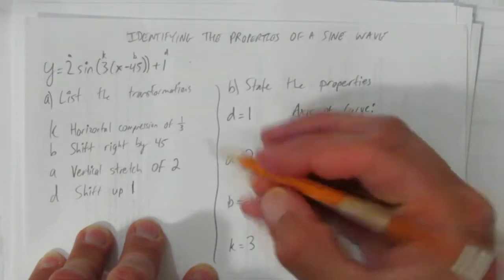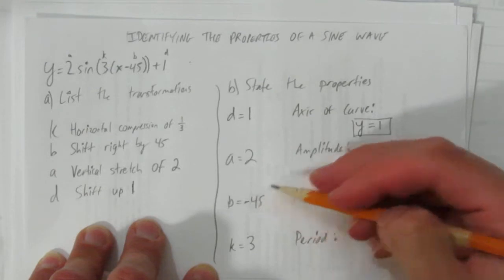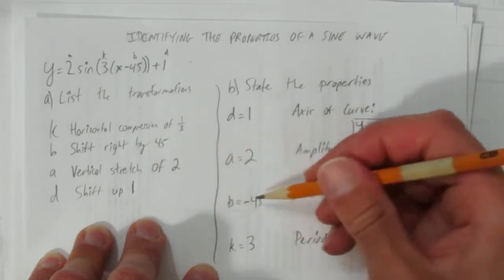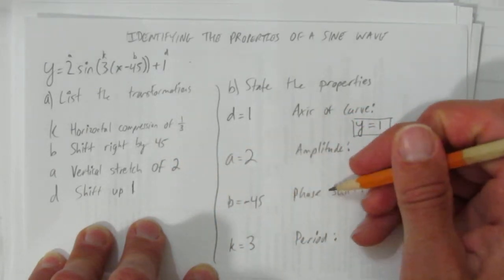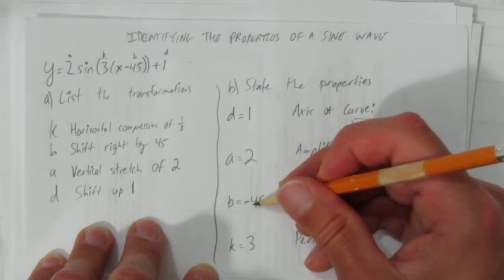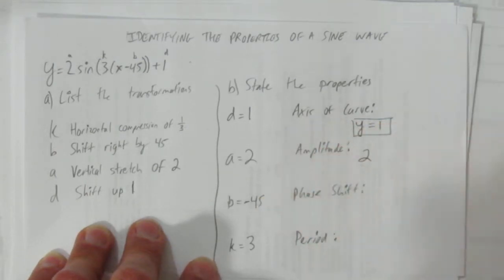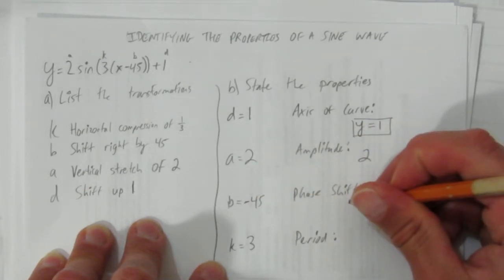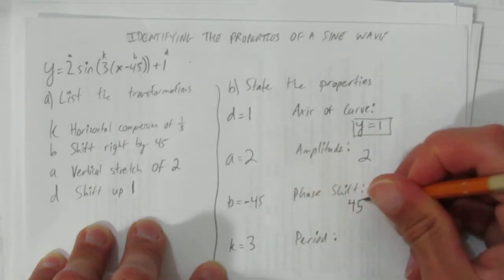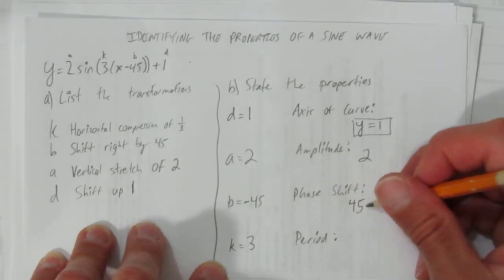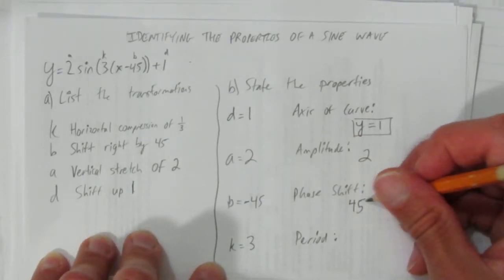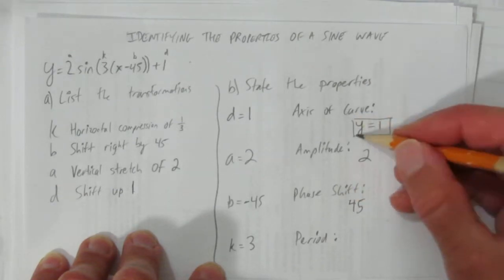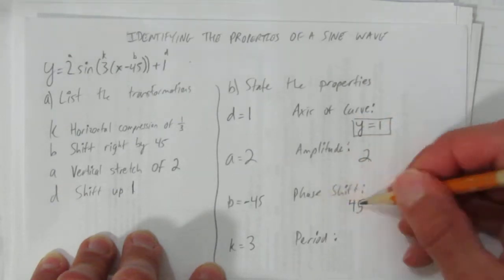The phase shift that's given by this b value, except with the phase shift, just like with the transformation, you switch the numbers. So here you have negative 45. Since x does the opposite thing, this negative 45 means it's a 45 degree or 45, whatever the units are, shift right. But I'm just going to write 45. It's a positive 45 phase shift. Axis of curve, y equals one. Amplitude is two. Phase shift 45.